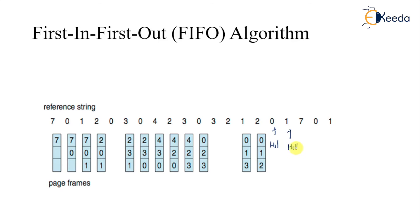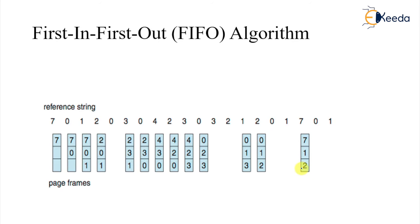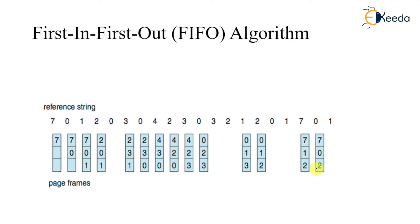Zero is a hit, one is a hit — both are hits. Then one, two, one, two — hits continue. When seven comes, zero is replaced — that is the thirteenth page fault. Then zero takes out one — fourteenth page fault. Then one goes out with two — fifteenth page fault. So this is the 13th, 14th, and 15th page fault.